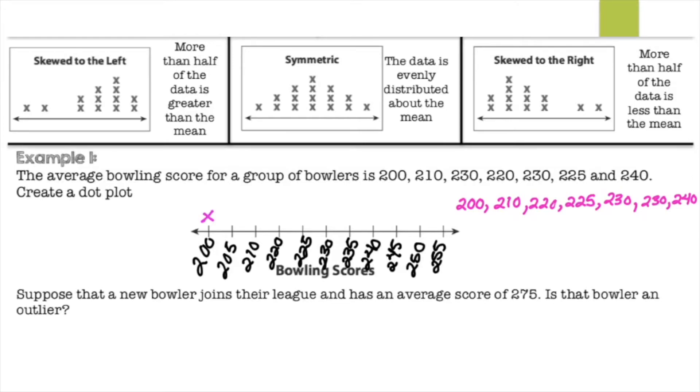So 200 up to X, at 210, at 220, at 225, at 230, at 230, and at 240. So now it says, first look at that, you can see that it is skewed to the right, which means that we have some data values that are to the left of the mean. So it says suppose a new bowler joins their league and has an average score of 275. Is that bowler an outlier? So first we have to put it in least to greatest again, find the median.